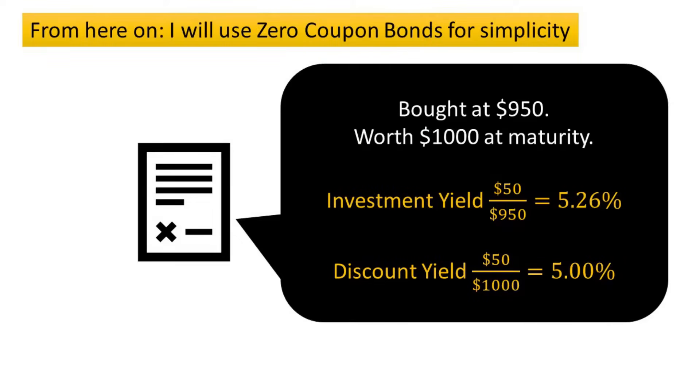The other way of calculating yield is by using discount yield. With discount yield, the denominator is not the same — the benefits to you is still $50, but this time the denominator you use is the face value of the bond, which is $1000. So in this case, the discount yield of that particular bond is 5%.